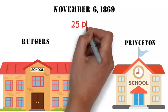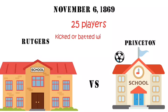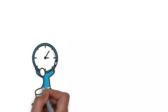They used a round ball that couldn't be carried. It could, however, be kicked or batted with the feet, hands, head, or sides, with the goal being to advance it into the opponent's goal post. Rutgers won the match six to four. University play continued for several years with matches played using the rules of the host school.